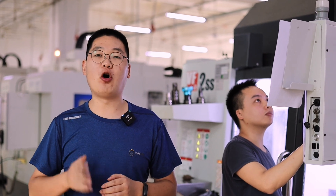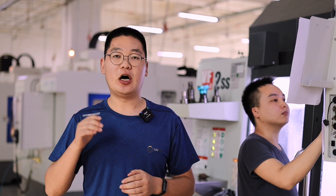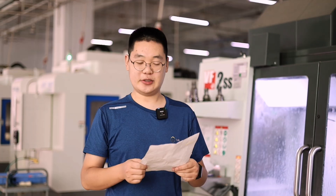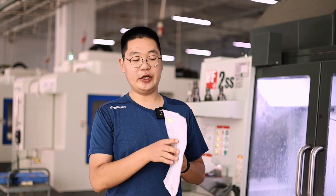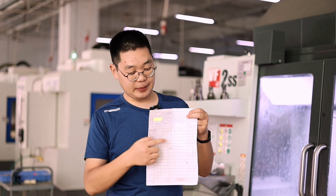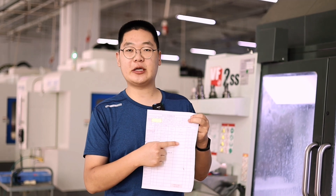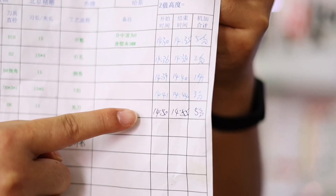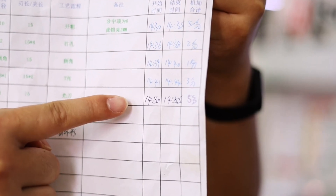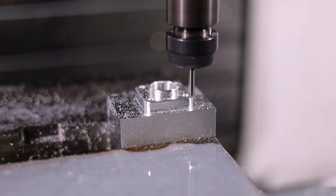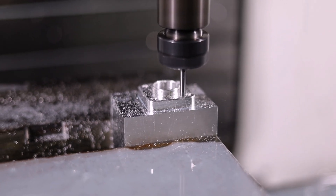The time of the whole process will depend on the complexity of the parts. As you can see, when each step is completed, the operator will write down the time consumed for each step. The machine is working.